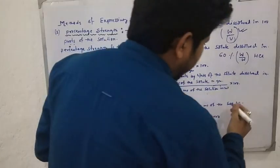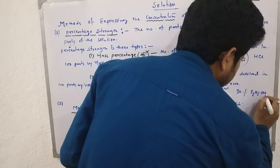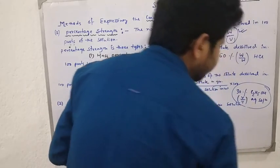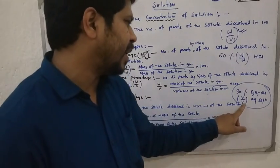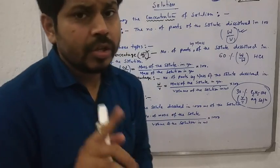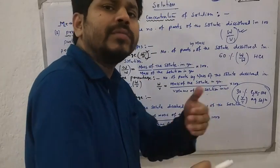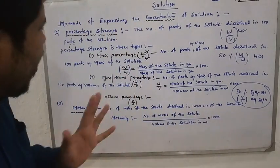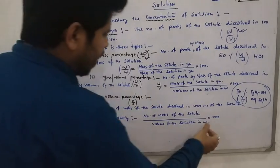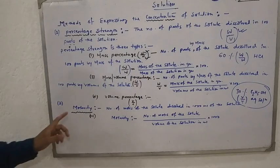For example, consider a 30% C₂H₅OH aqueous solution. In case of mass percentage, you always multiply by 100. After completing percentage strength, we are moving towards the next topic, which is molarity.